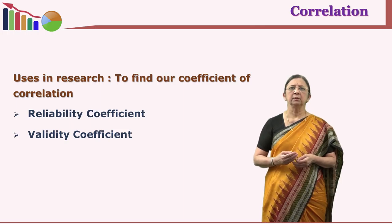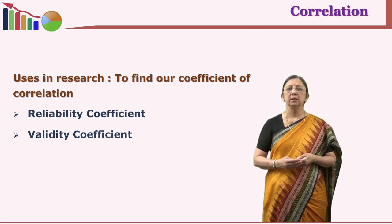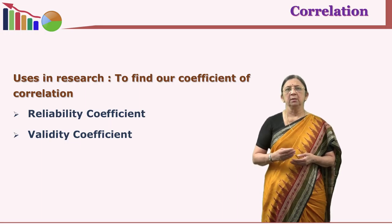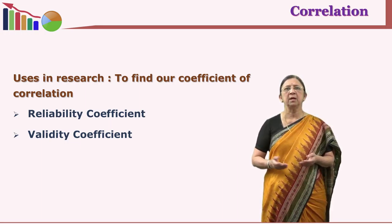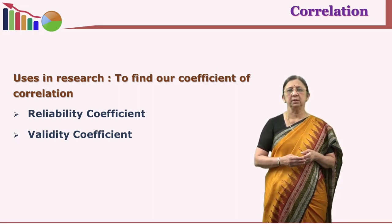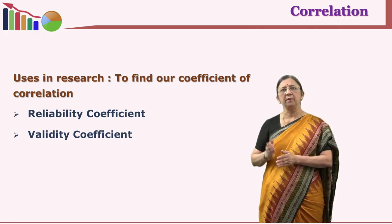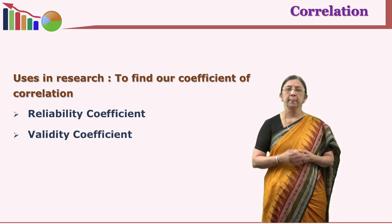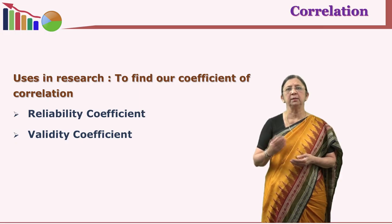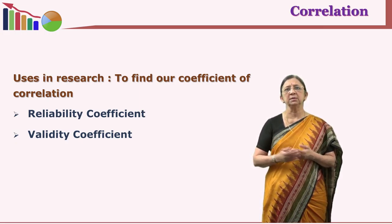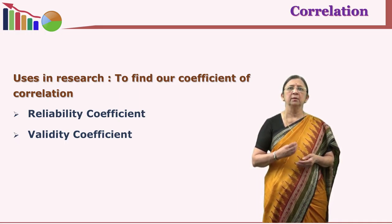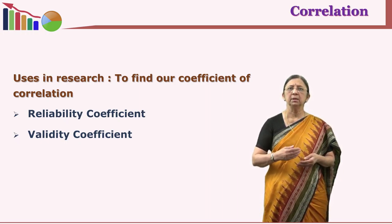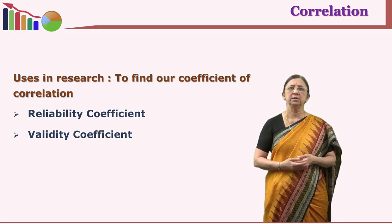We use r in many situations. For example, in test-retest reliability: we take scores on one occasion, give the same test after 15 days, and find the correlation between the two sets of scores. If r is very high — 0.8 or 0.9 — the test is reliable. A researcher can also use r for finding the coefficient of validity and in many other areas where we want to see the relationship between two variables.